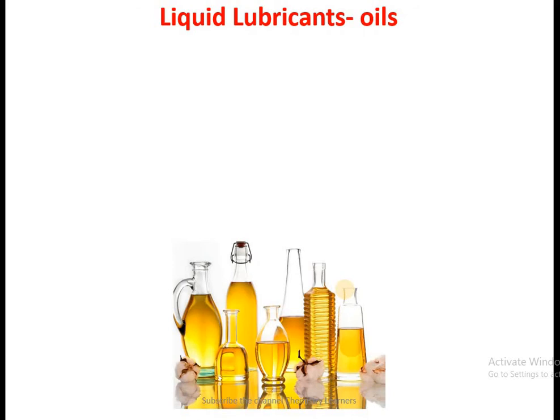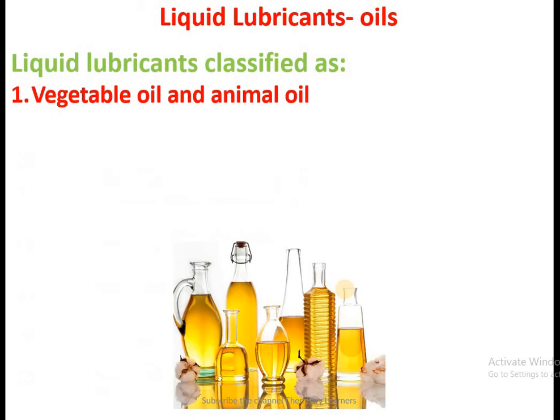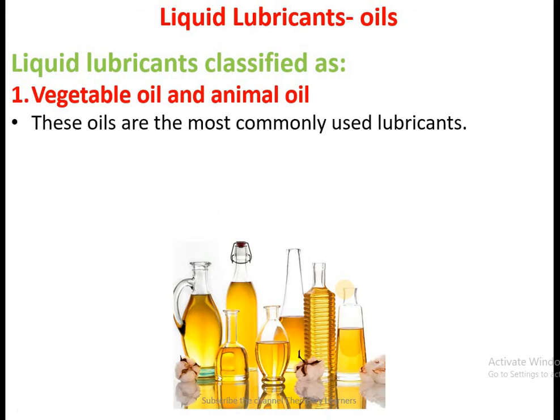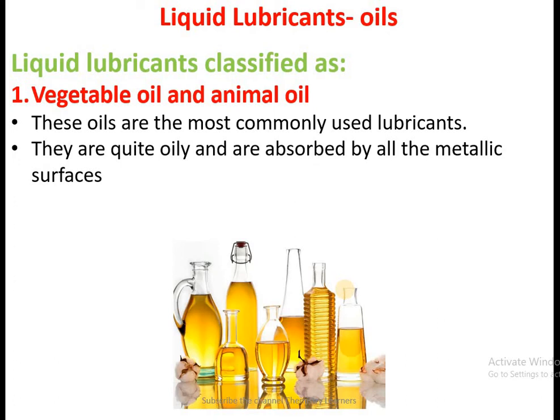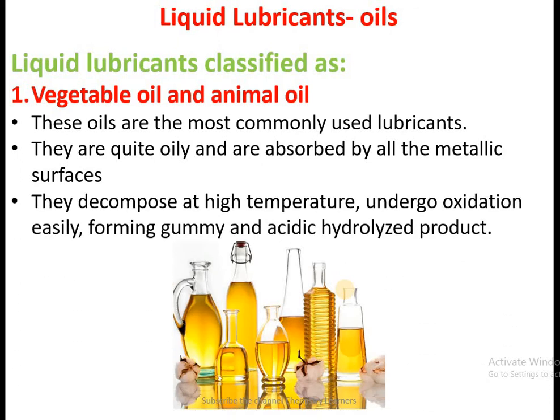Liquid lubricants use oils as examples. Different oils are used as liquid lubricants and they have different classifications depending on their ingredients. These include vegetable oils and animal oils, which are the most commonly used lubricants. They are quite oily and absorbed by all metallic surfaces. However, they decompose at high temperature under oxidation and undergo oxidation easily, forming gummy and acidic hydrolyzed products.